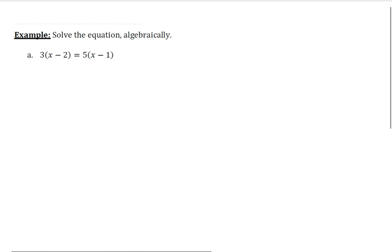Alright, first thing we're going to do is clear parentheses on each side. So that's going to happen via the distribution process. On the left, we get 3x minus 6. And on the right, we get 5x minus 5.